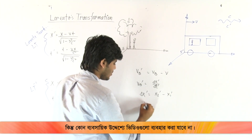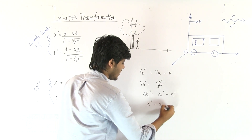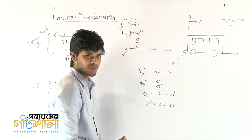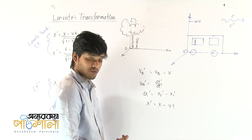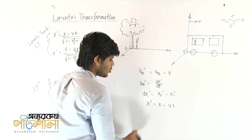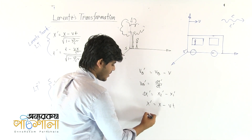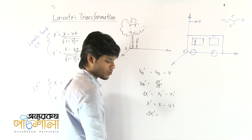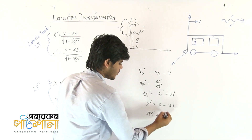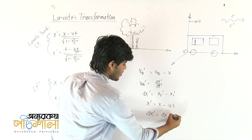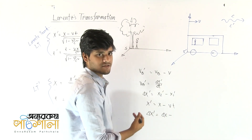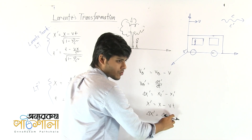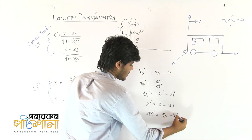See how, where x prime equals x minus vt. I will get a transformation of delta x into delta x. I will be able to do delta x prime. That's how I can do that! So what will happen? This is delta x prime, and the result is delta x prime. I will be able to do delta v.